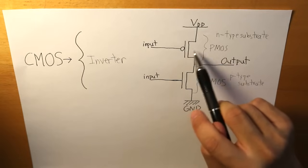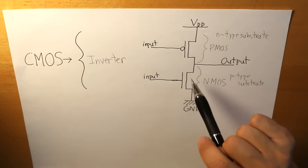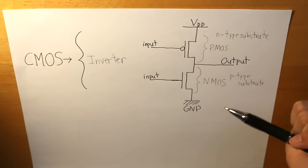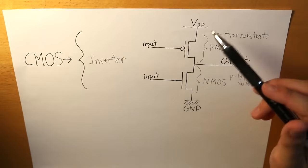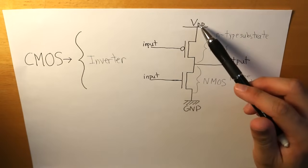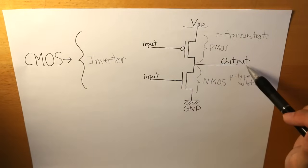Once it's low, the PMOS is going to give us the output as high. So when it's high the transistor is closed, the transistor is turned on, and the voltage travels across the PMOS transistor to the output.